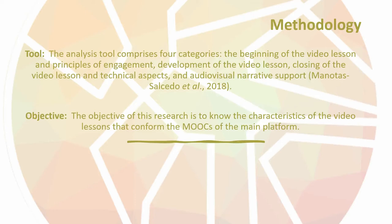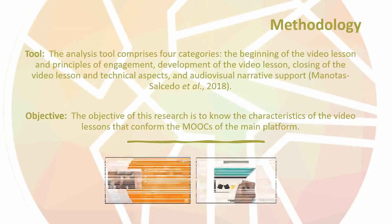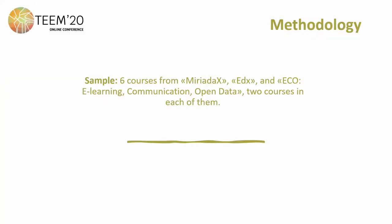The selection of the courses was made through a search using keywords related to the object of study: social science and digital communication. The sample is based on six courses from Media.exe, et.exe, and ECHO — covering eLearning, Communication, and Open Data, with two courses from each platform.